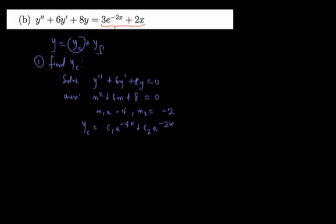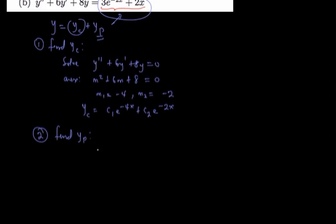The next thing is to find yp. Using the annihilator approach, I need an operator that will set the right-hand side to zero. The right-hand side is 3e^(-2x) + 2x, which constitutes two quantities. I need an operator that annihilates 2x and one that annihilates 3e^(-2x). The product of those two annihilators gives the annihilator of their sum.